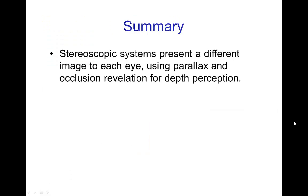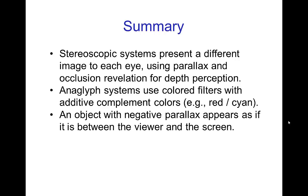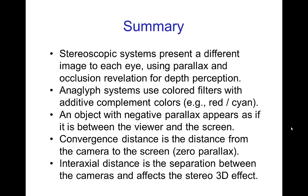In summary: stereoscopic systems present a different image to each eye using parallax and occlusion revelation for depth perception. Anaglyph systems use colored filters with additive complement colors such as red-cyan. An object with negative parallax appears between the viewer and the screen — coming at the audience — while positive parallax means the object appears to be inside the screen. Convergence distance is the distance from the camera to zero parallax. The interaxial distance is the separation between cameras, and the greater the interaxial distance, the greater the stereoscopic effect.